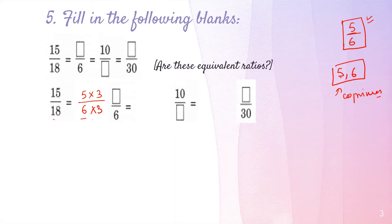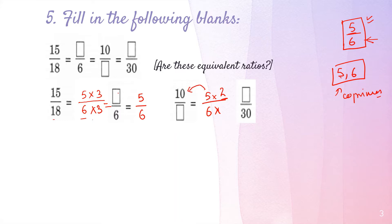So 5 upon 6 is the lowest fraction. Now for the blank upon 6: we already have 6 in the denominator, which matches our lowest form, so the numerator is simply 5. Next, for 10 upon blank: since 5 times 2 is 10, we multiply both numerator and denominator of 5/6 by 2, giving denominator 12.